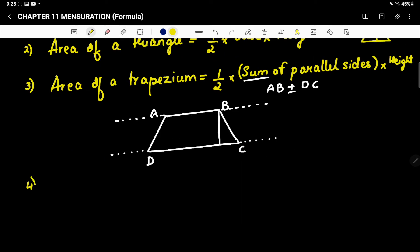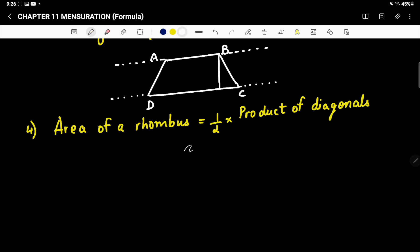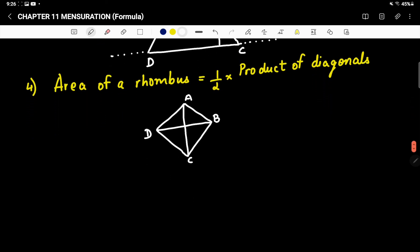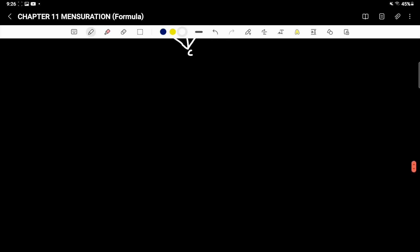Let us see the next one, area of a rhombus. Half into product of diagonals. Product means what? And rhombus looks something like this. And these we call diagonals. So we have to find the product of these. Product means what? Multiplication. When we do the sums, the picture will become more clear. So do not worry for the timing, just remember the formulas.